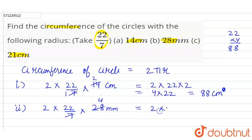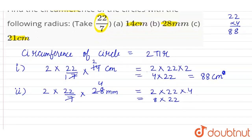So 2 × 22 × 4, which equals 2 × 4 = 8, then 8 × 22. We calculate 22 × 8: 8 × 2 is 16, carry 1; 8 × 2 is 16, plus 1 is 17. So the circumference when the radius is 28 mm is 176 mm.